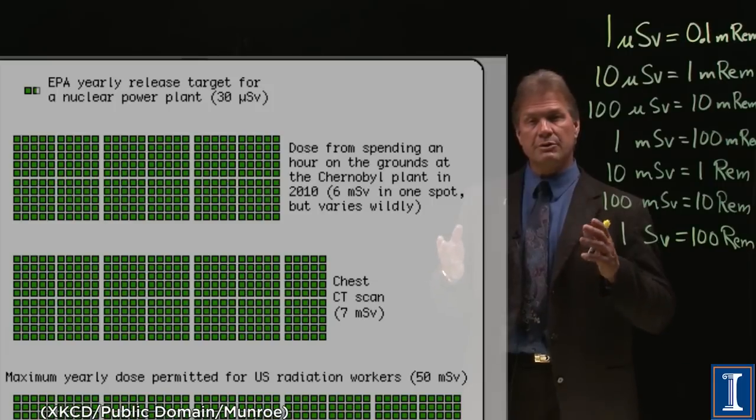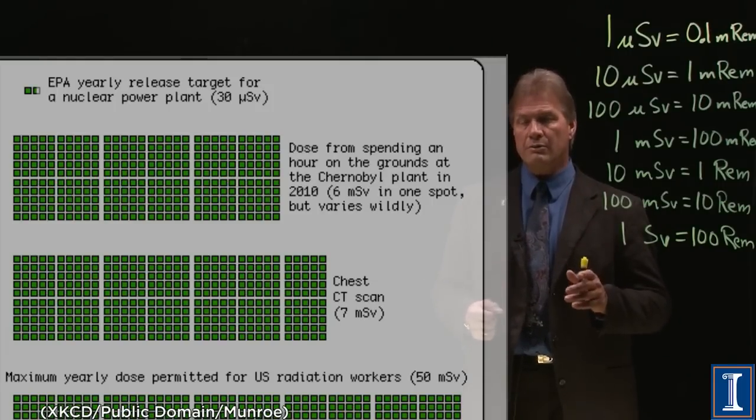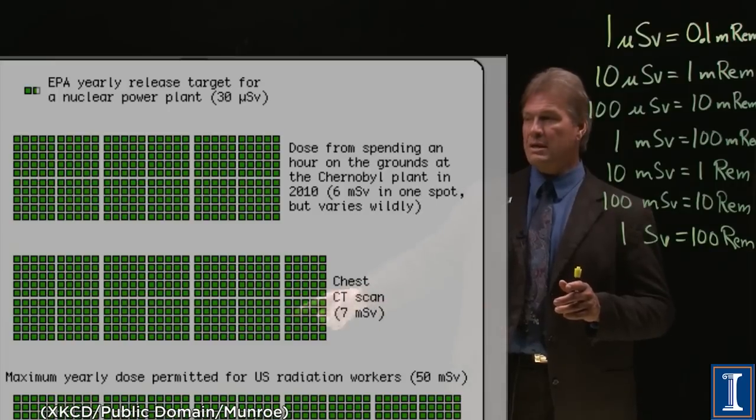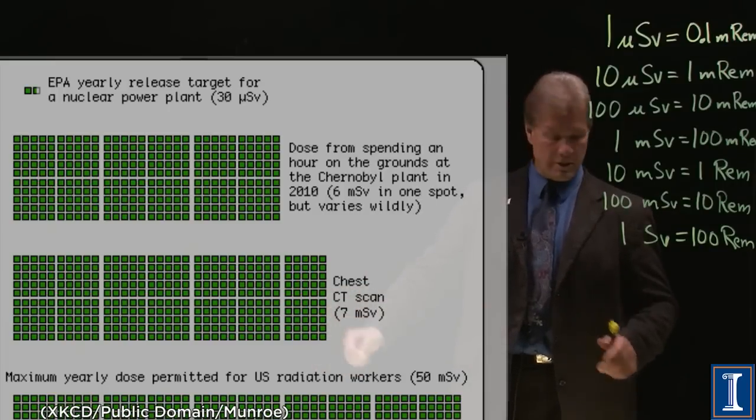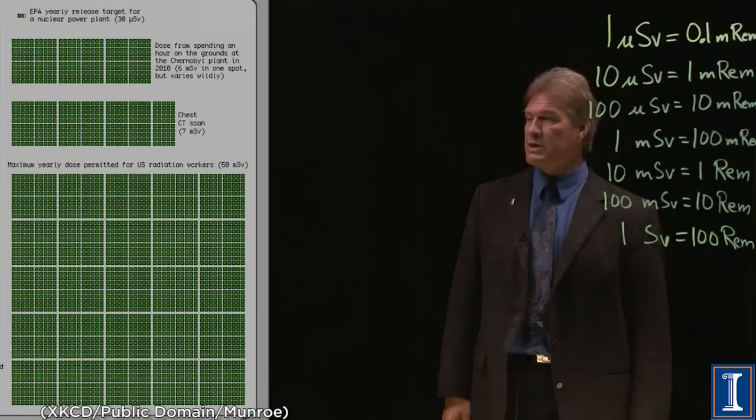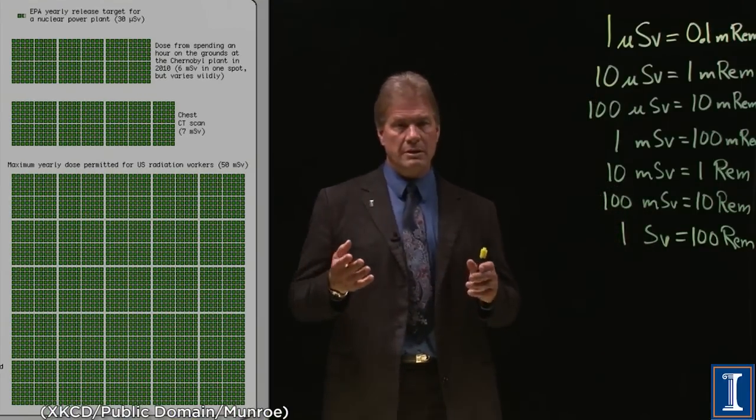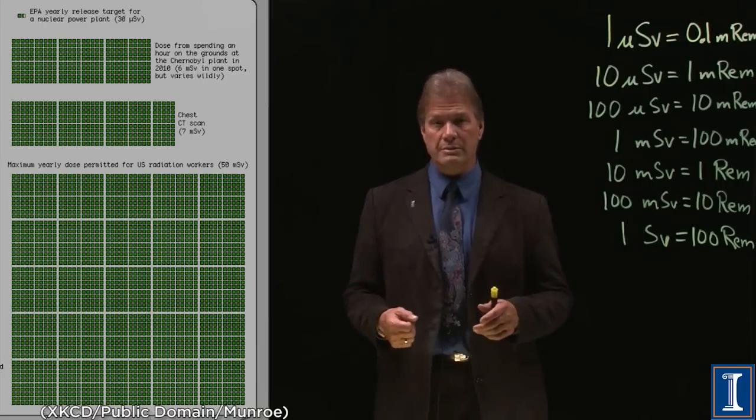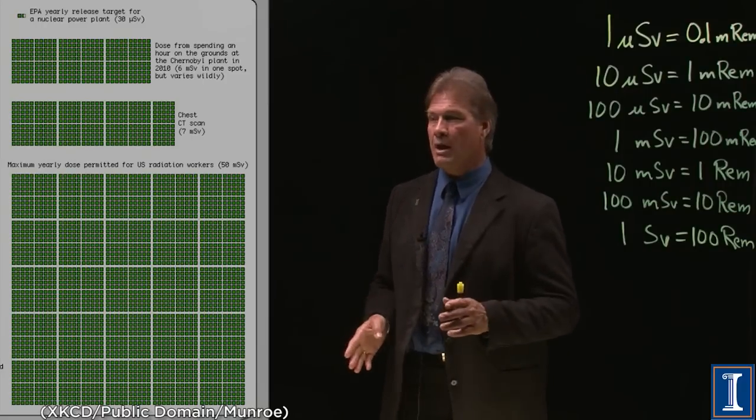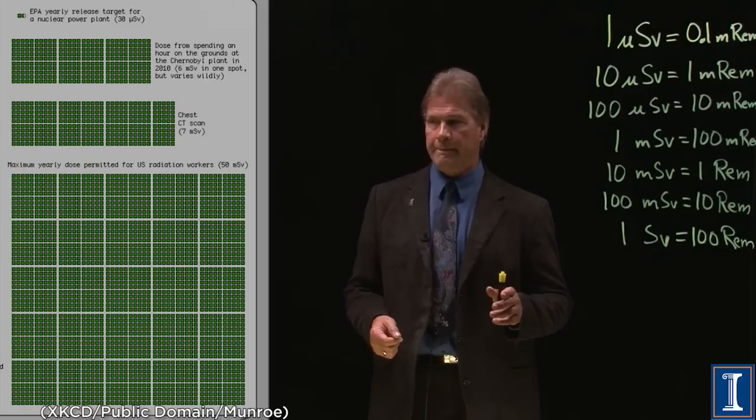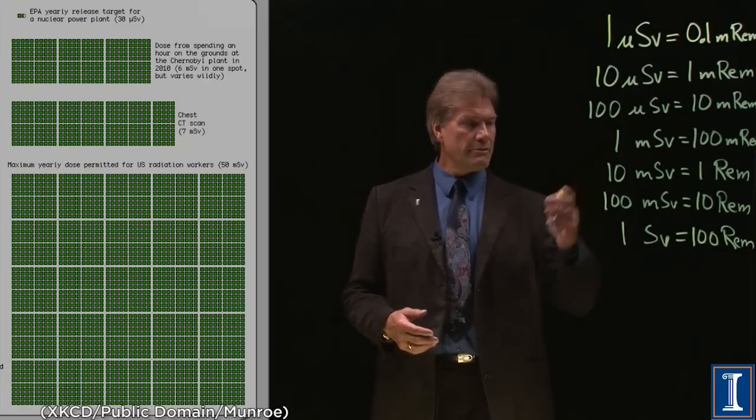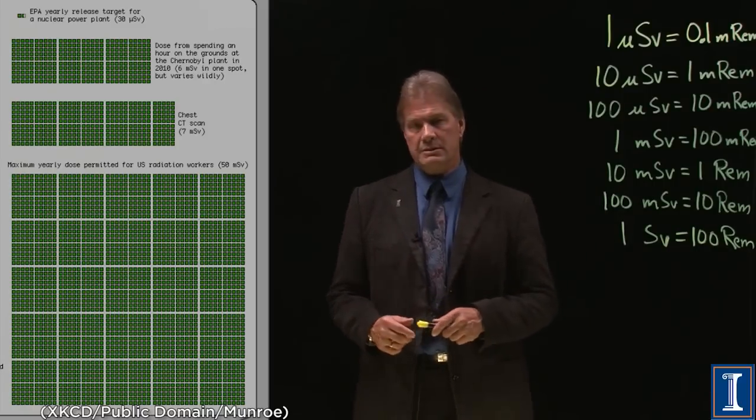Still, though, these numbers are below the limit imposed for workers who work in radiation. In fact, it's a lot larger than this looks. Let's go ahead and blow that up to the full size. The limit for a radiation worker in the United States, and this is uniform across the world, is 5 rem per year.